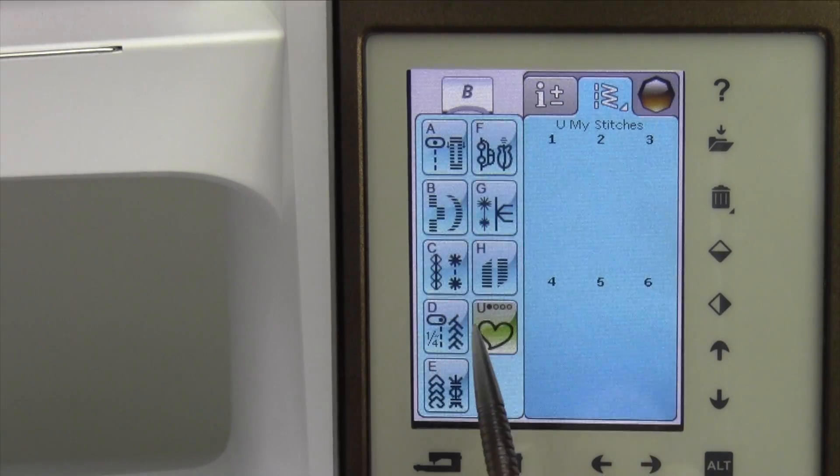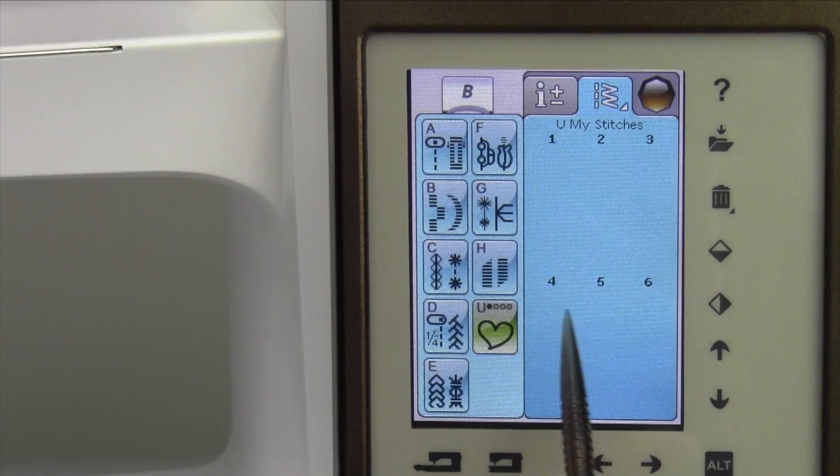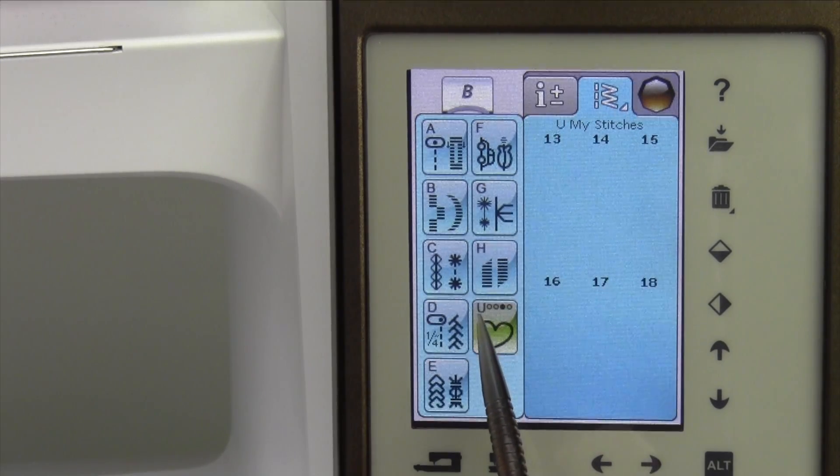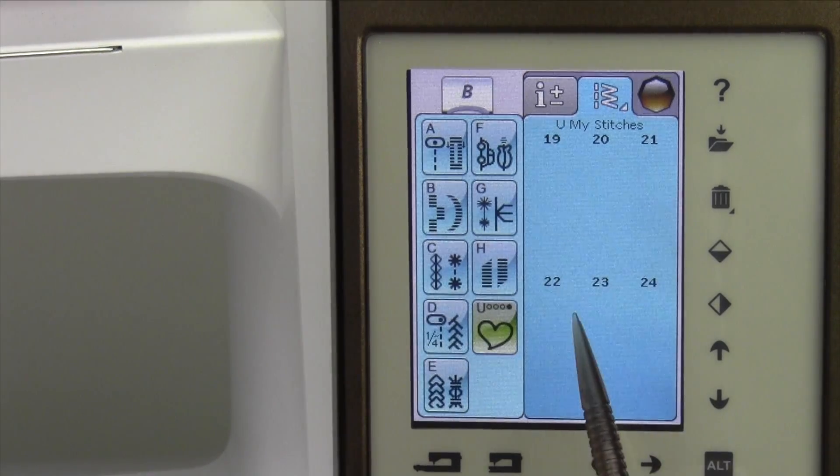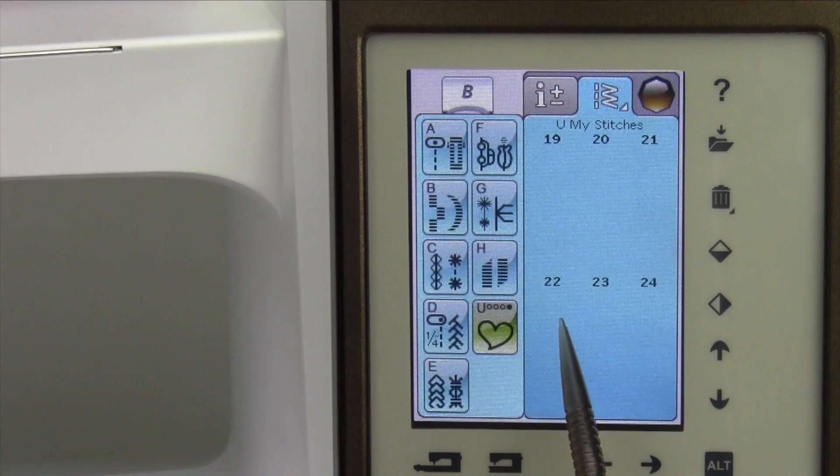Do notice, though, on your U menu, there are four little slots, so we have six stitches on this, six on the next, so you have a total of 24 locations. You can save programs or stitches that are set for the way you sew.